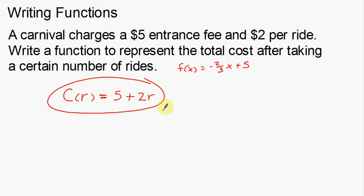That's one quick example of how to write a function. Notice how similar it looks to the f(x) example. A little bit of differences: this one is function F using variable X with a slope of negative two-thirds, and this one is function C using variable R with a slope of 2. Both happen to have a y-intercept of 5. And that is how you write a function.